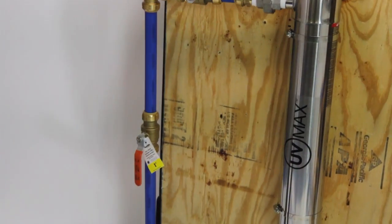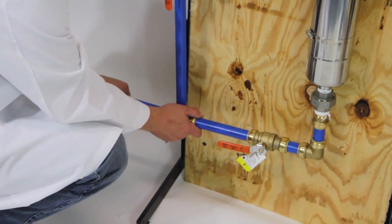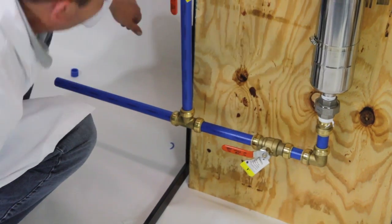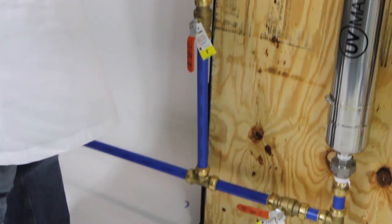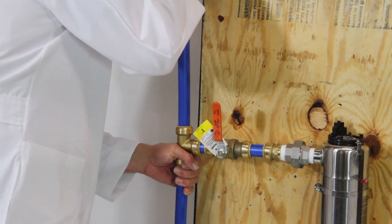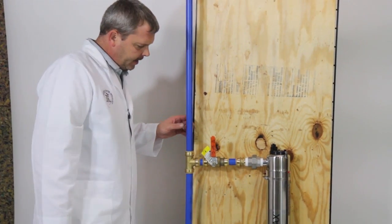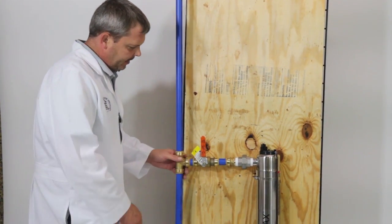The inlet plumbing normally would come in the bottom here, and then your outlet plumbing would come out the top here. Now that we have this plumbed in, I can show you how the bypass works.